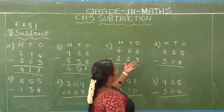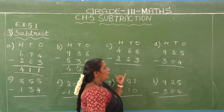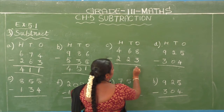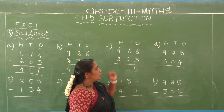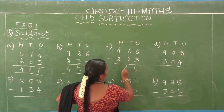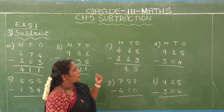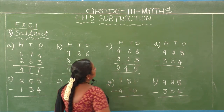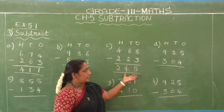C1: 468 minus 223. Ones place — second number 3, first number 8: 3 after 4, 5, 6, 7, 8. Difference is 5. Tens place — second number 2, first number 6: 2 after 3, 4, 5, 6. Difference is 4. Hundreds place — second number 2, first number 4: 2 after 3, 4. Difference is 2. So 468 minus 223 equals 245.